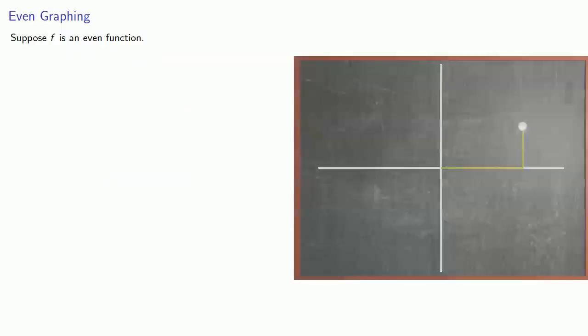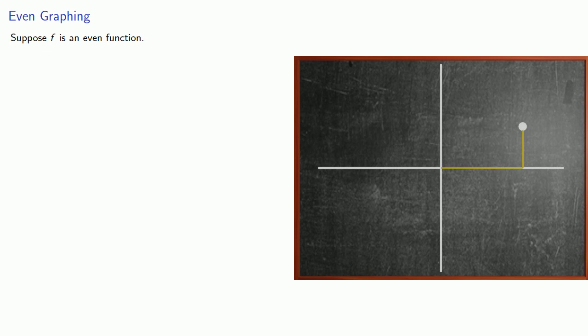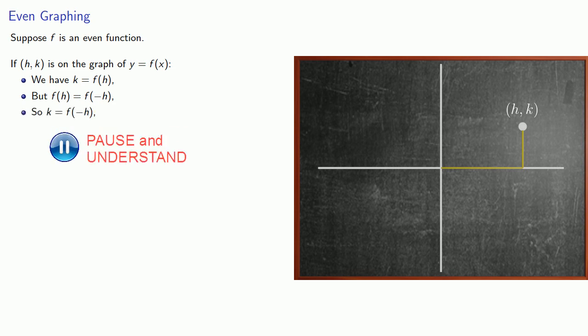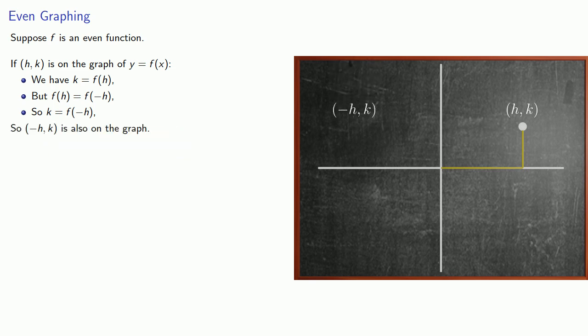What about graphing? Suppose f is an even function. If some point (h, k) is on the graph of y equals f of x, we have k equals f of h. Since f is even, f of negative h equals f of h, so k equals f of negative h. And so the point (negative h, k) is also on the graph. And this means the graph of y is symmetric about the y-axis.